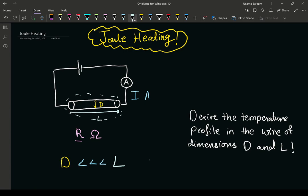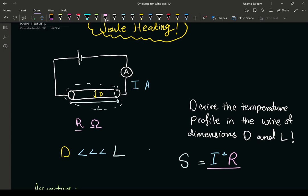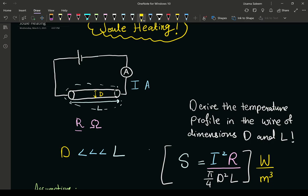Before moving to the actual solution, it's good practice to look at how the generation term is going to look. The source term in this problem is going to be I squared times R — I being the current and R the resistance — divided by the volume of the wire. Since it's a perfect cylinder, the volume is pi over 4 times d squared times l. This term has units of watts per meter cubed — power per volume, or energy per time per volume — which fits our heat conduction equation.